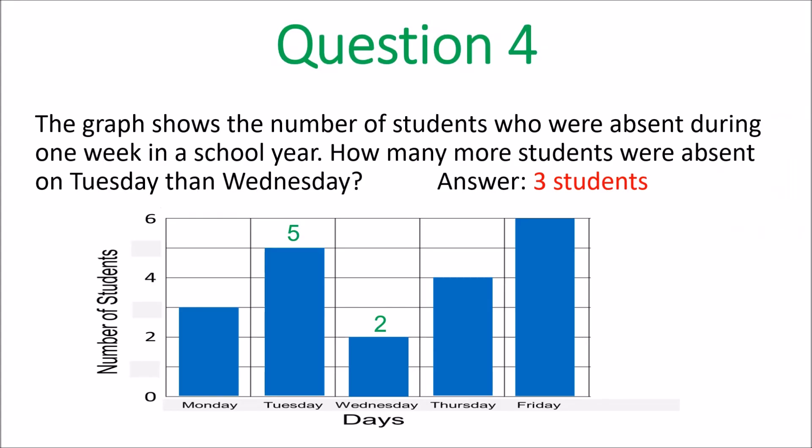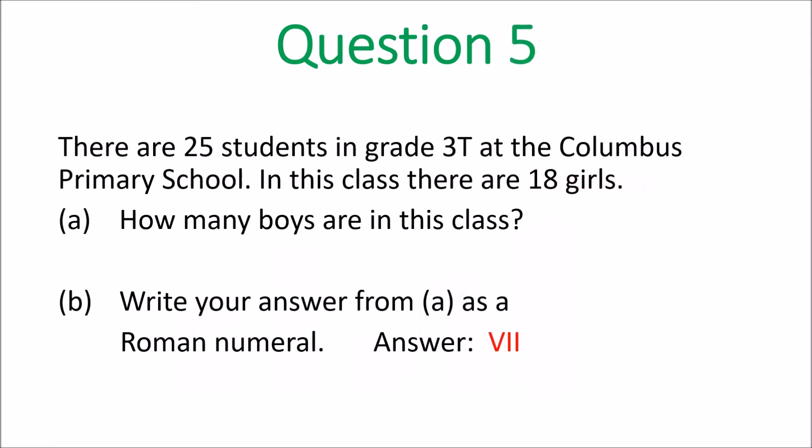Question 4. The graph shows the number of students absent during one week. How many more were absent on Tuesday than Wednesday? For Tuesday it would be 5, for Wednesday it would be 2. So 5 take away 2 gives you 3 students. Once you're given a bar graph like this, put the numbers in and use them as you need them.